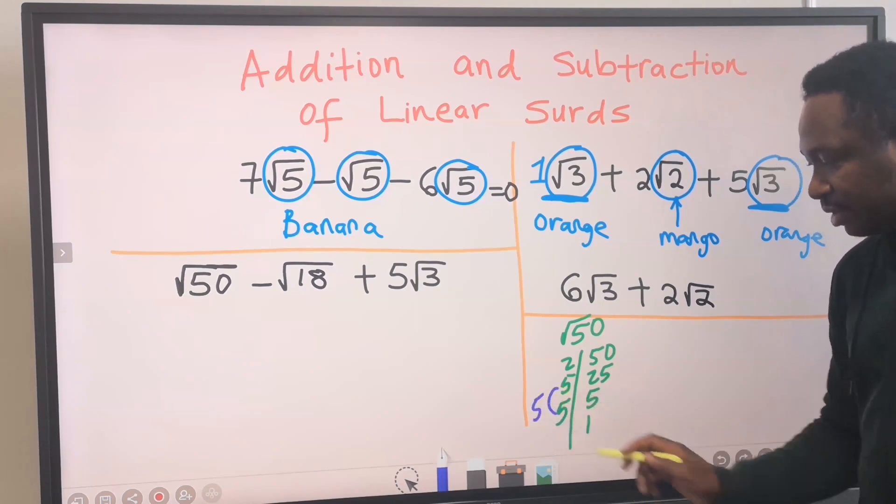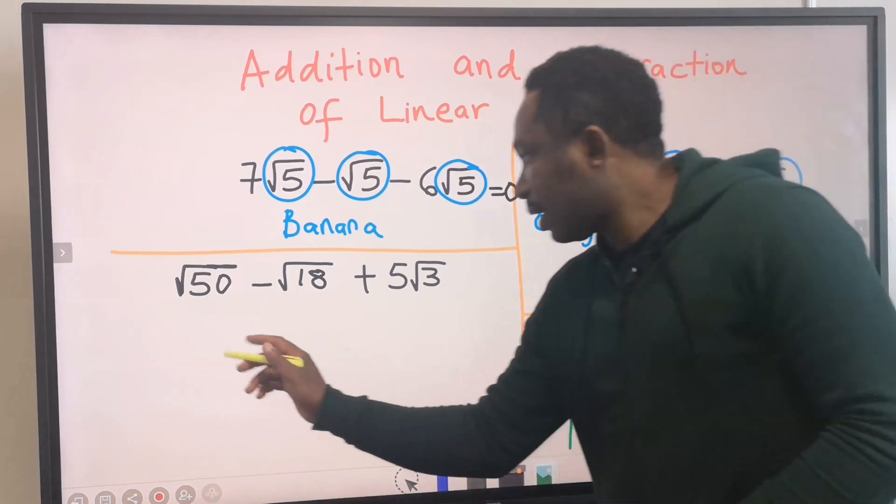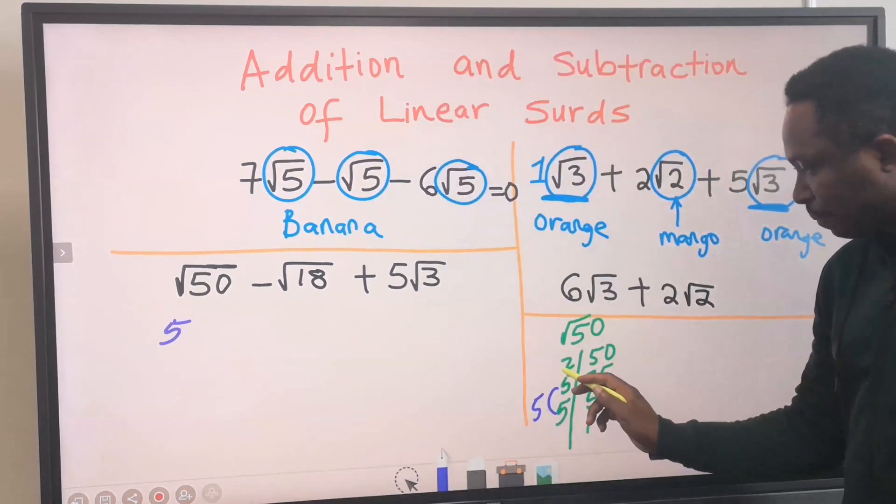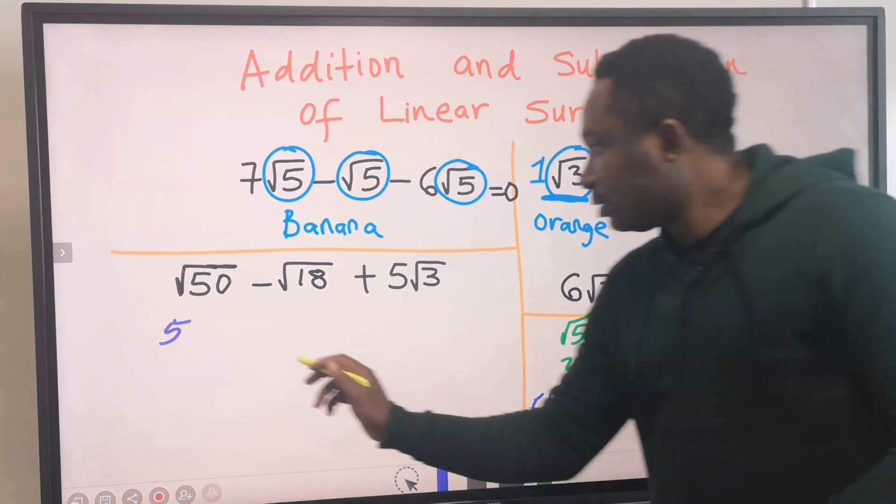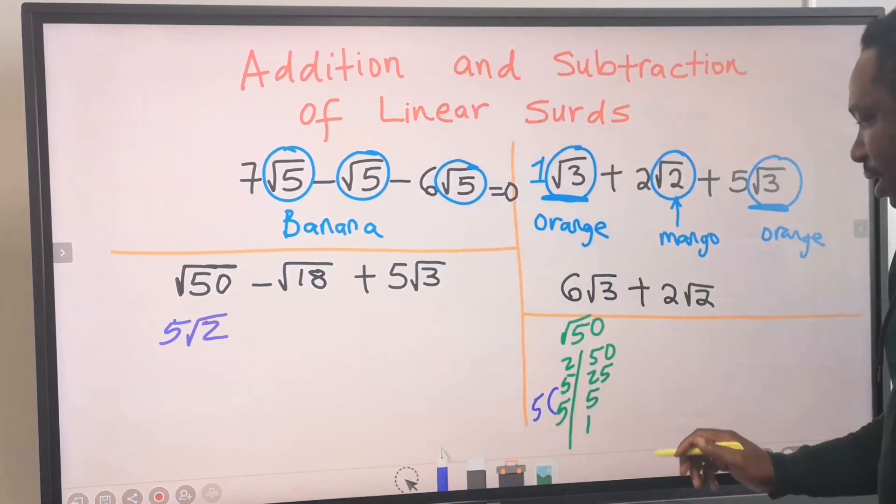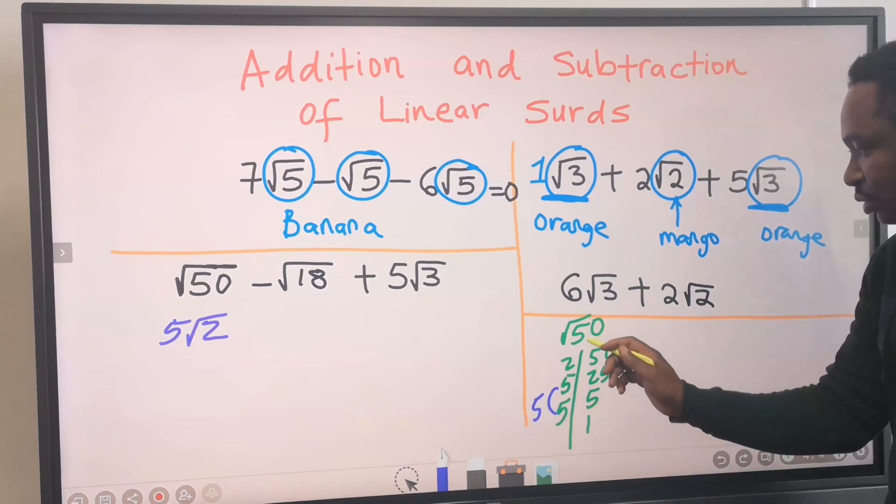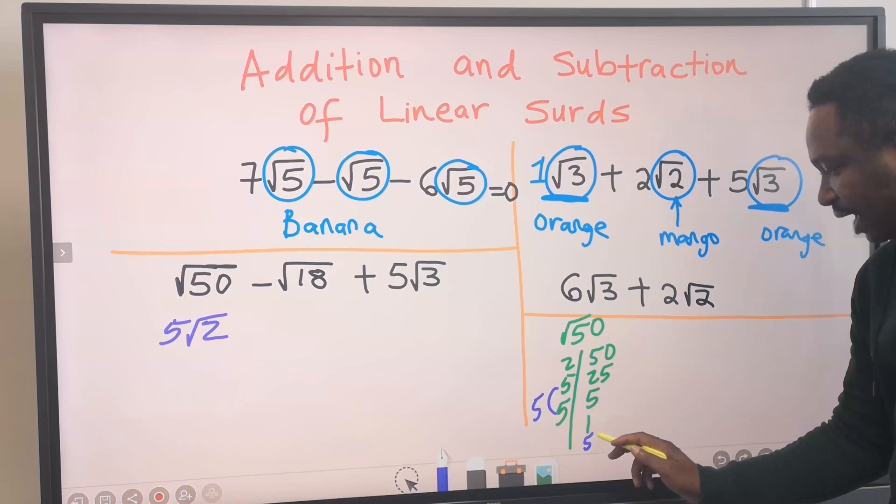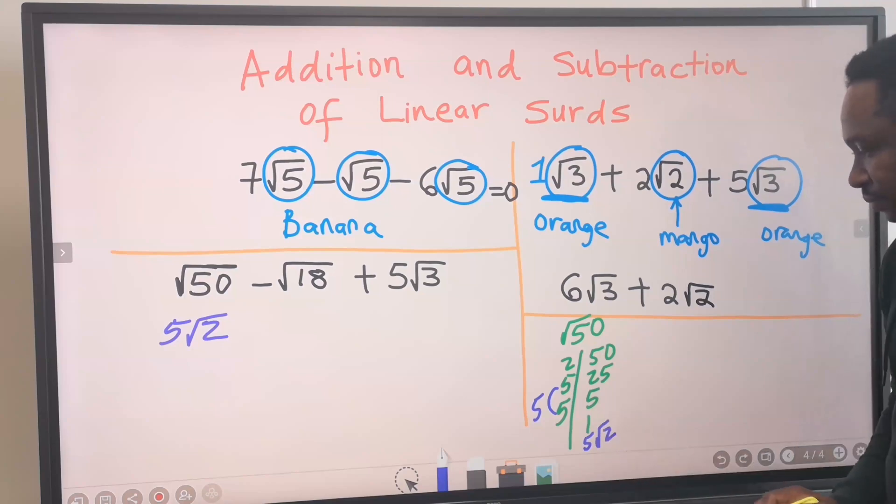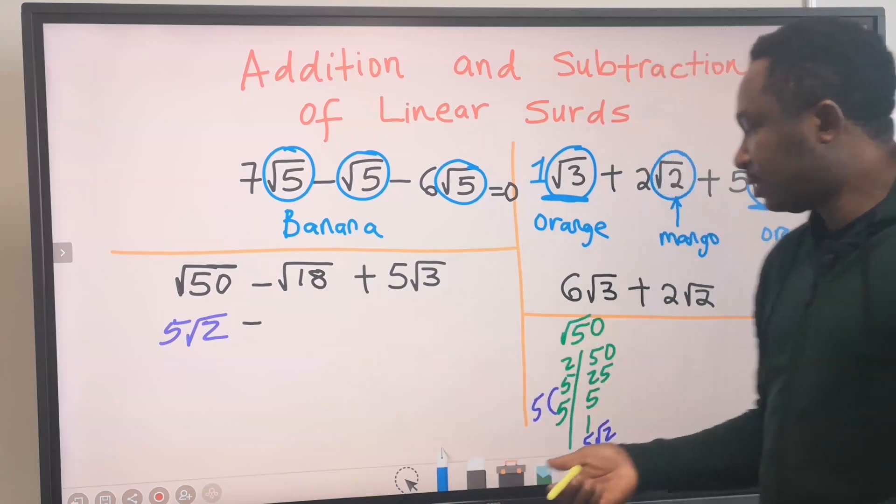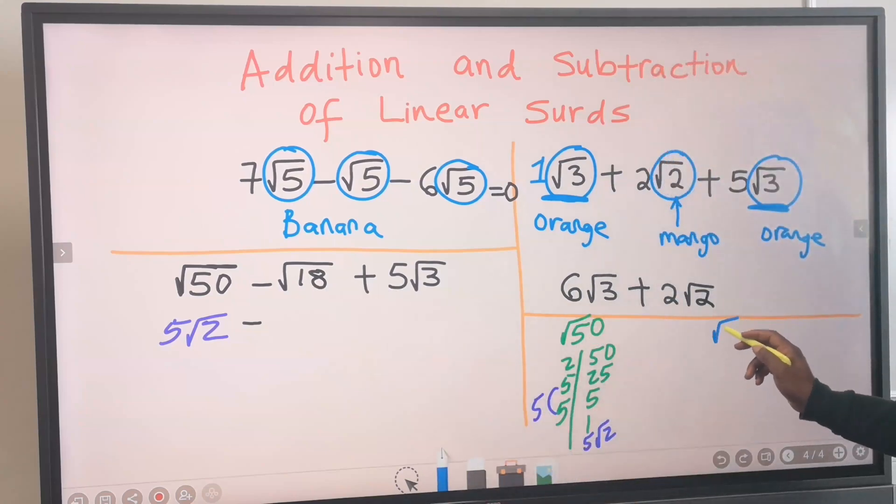This is 5. This 5 is paired. And here, 5 is paired. 2 got no pair. These 2 will go into the root. Hence, the square root of 50 is the same thing as 5 root 2. We have a minus for 18. The square root of 18.